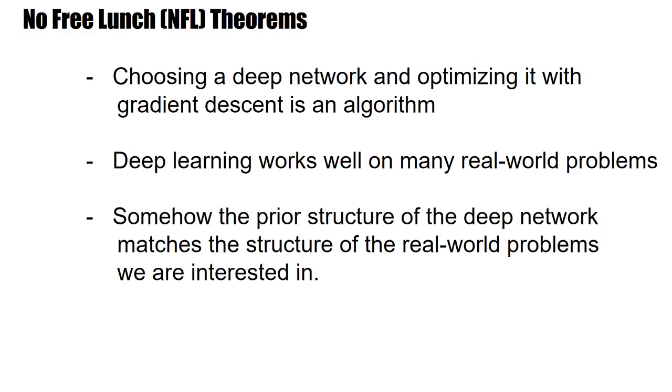So let's apply this to neural networks. Choosing a deep network and optimizing it with gradient descent is an algorithm. Deep learning works well on many real world problems. So now, what does that mean? Well, it means that somehow the prior structure of the deep network matches the structure of the real world problems we are interested in.